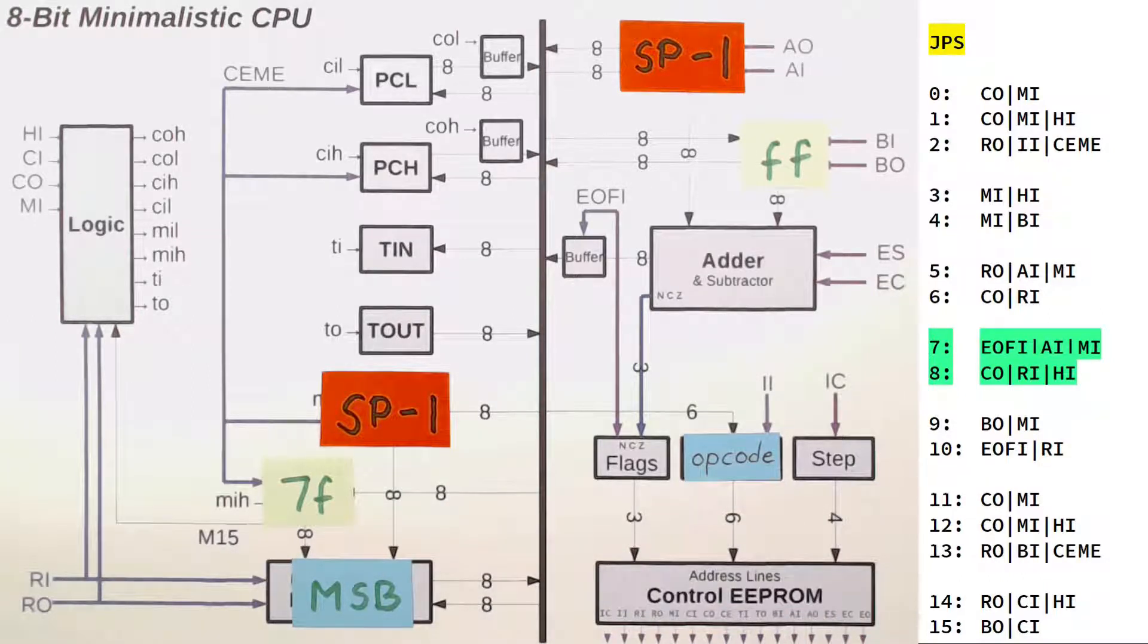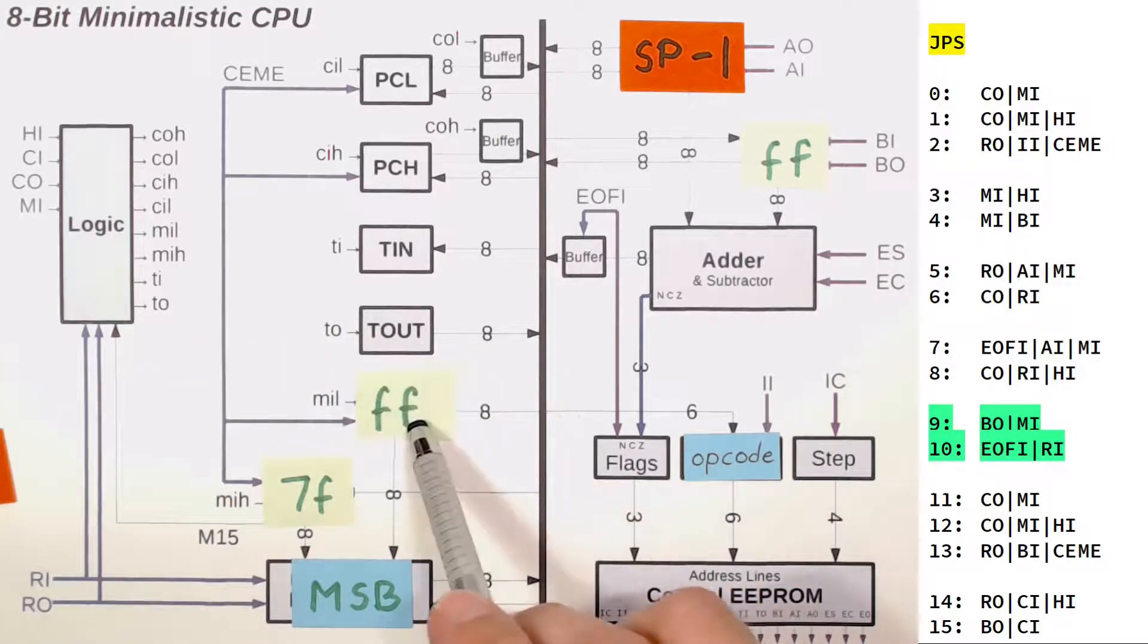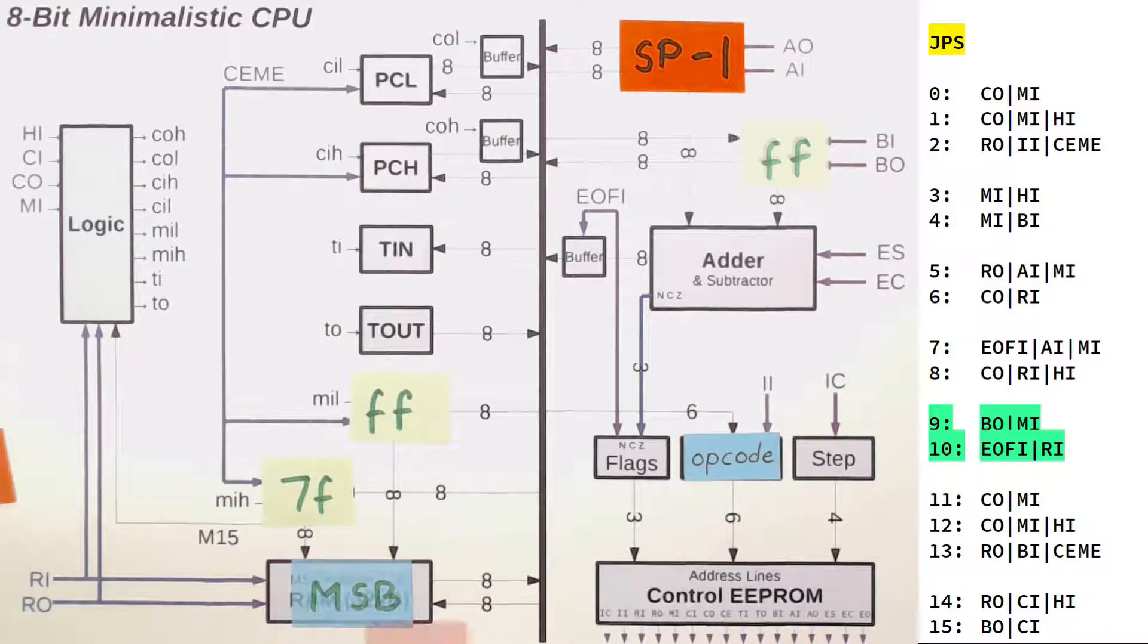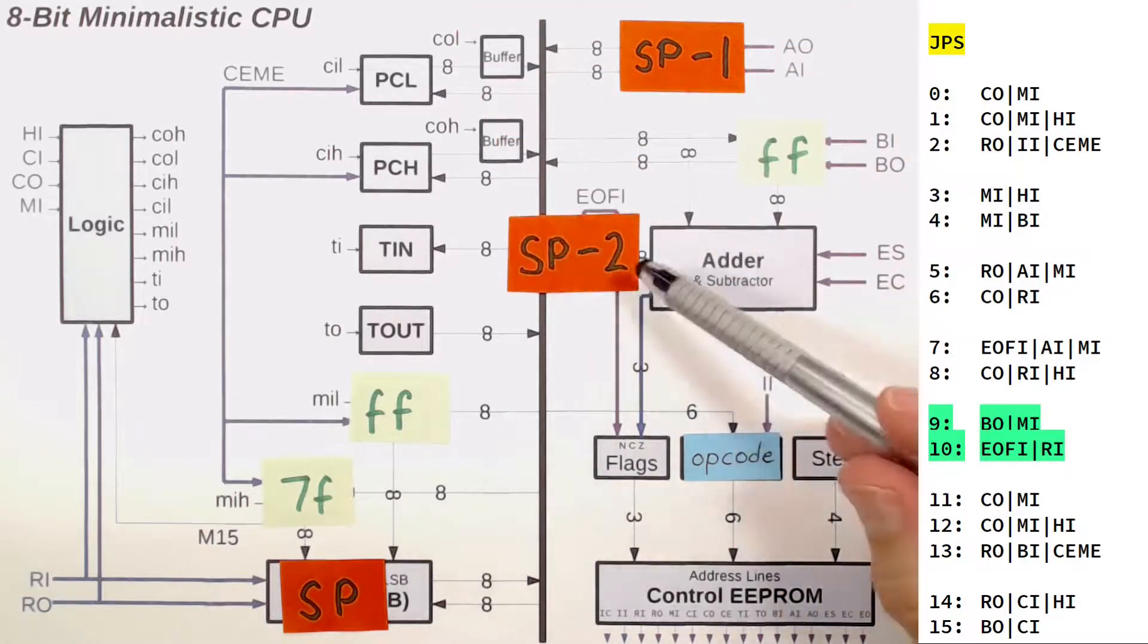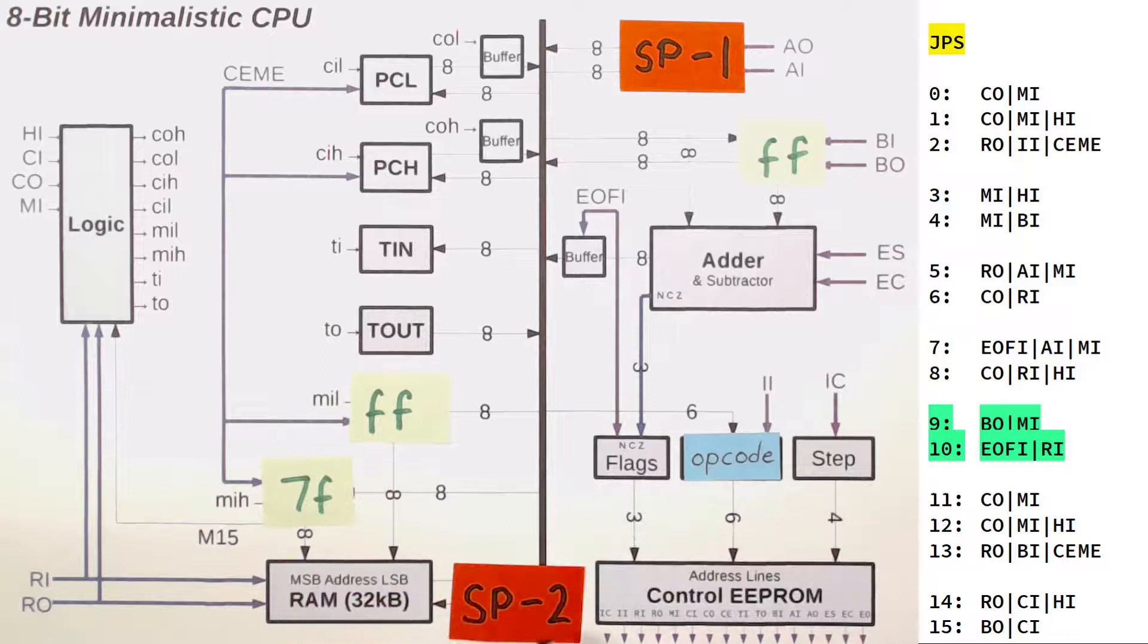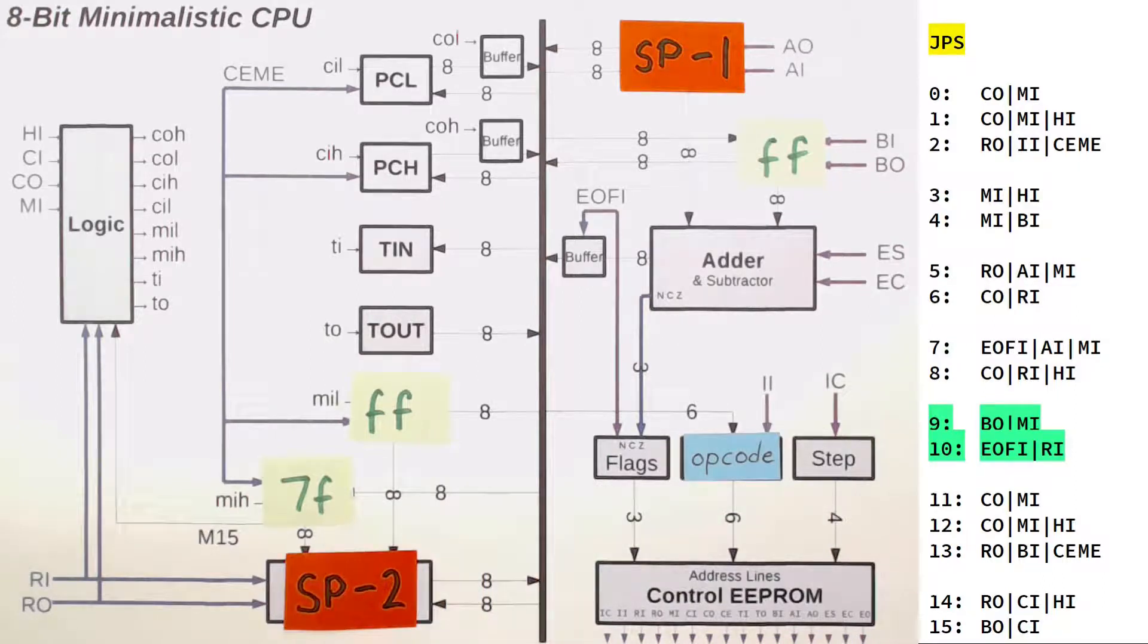To be precise, it's the return address minus 2. When we want to return from our subroutine, we need to keep that in mind and resume at that address plus 2. Now we need to write back the updated stack pointer to 7FFF. So BOUT MEMORY IN points the MAR back to 7FFF. Since A already contains the stack pointer minus 1 and B is minus 1, then microstep line number 10 just outputs the stack pointer minus 2 and writes it into our stack pointer at 7FFF.